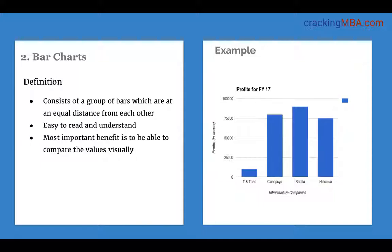Let's look at the example which is provided on the right side. The bar chart represents the profits in crores of four infrastructure companies for financial year 17. The x-axis represents the companies and the y-axis represents the profits in crores. We can clearly observe that Rabilla has the highest profits while TNT Inc. has the lowest profits.